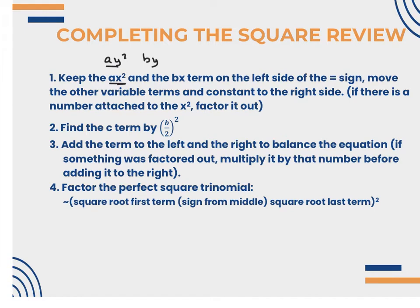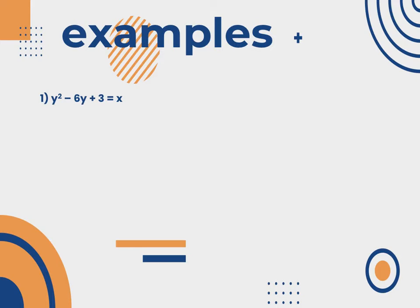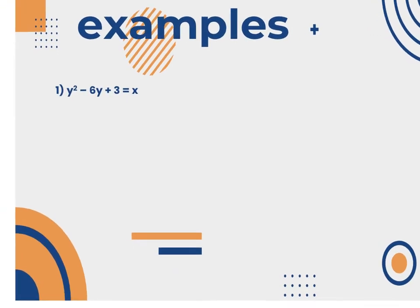I know this is a lot of words, but as you see the examples, it'll simplify. You may be given questions where they just say 'put this equation in standard form' without telling you if it's a parabola, ellipse, or hyperbola. The key difference: a parabola has only one squared variable — either x squared or y squared, not both. An ellipse or hyperbola will have both. The ellipse has an addition sign in between, and the hyperbola has a subtraction sign.